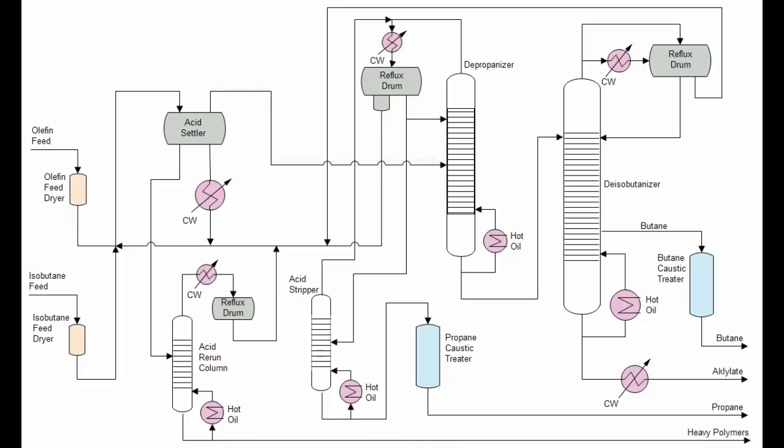The lighter reaction products are fed to a depropanizer where propane is separated overhead. The overhead drum contains both a hydrocarbon and heavier liquid layer. The majority of the acid accumulates in the heavy layer where it is fed back to the reactor feed.